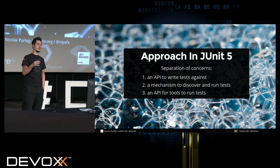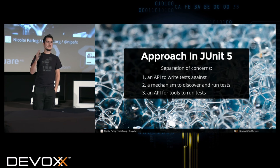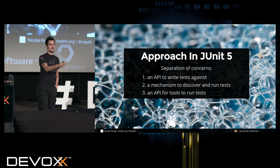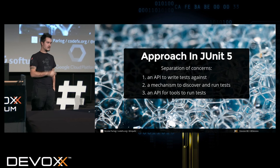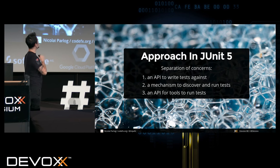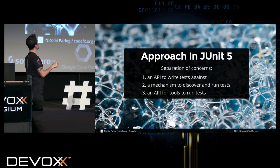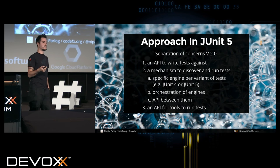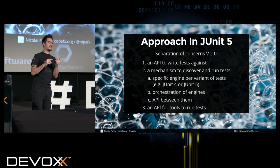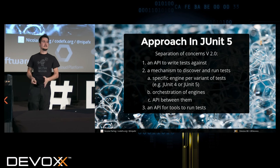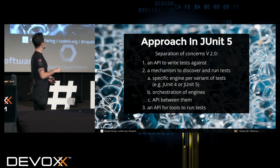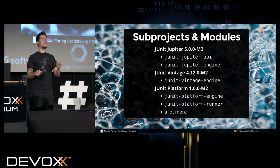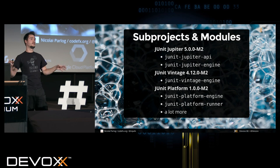Johannes Link, one of the initiators of the JUnit 5 rewrite, said that the success of JUnit as a platform prevents the development of JUnit as a tool. JUnit 5 took a different approach: from the beginning, the idea was to separate concerns — an API to write tests against, a mechanism to discover and run tests, and an API for tools. The mechanism to discover and run tests is further split: you have a specific engine for each variant of tests — an engine for JUnit 5 tests, an engine for JUnit 4 tests — and something that orchestrates them. JUnit 5 is just an umbrella for three different subprojects.